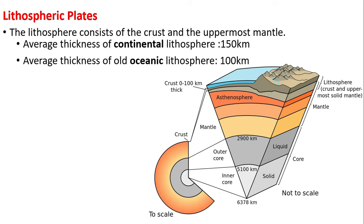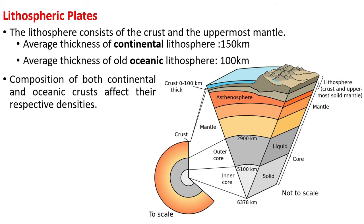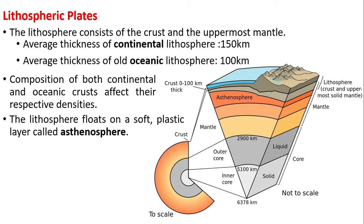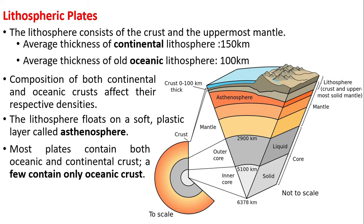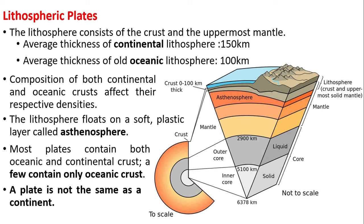The average thickness of cold oceanic lithosphere is 100 kilometers. Composition affects their respective densities. The lithosphere floats on a soft, plastic layer called the asthenosphere. Most plates contain both oceanic and continental crust, but a few contain only oceanic crust. An important thing to remember: a plate is not the same as a continent.